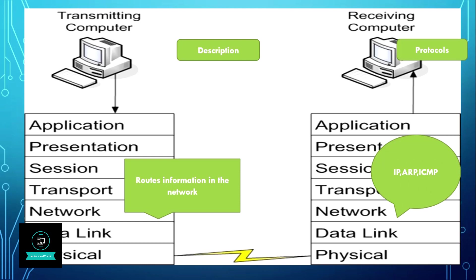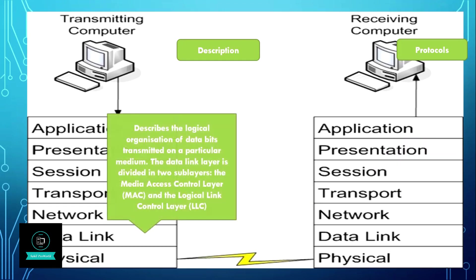The second layer is the data link layer. It describes the logical organization of data bits transmitted on a particular medium. The data link layer is divided into two sublayers: the Media Access Control layer (MAC) and the Logical Link Control layer (LLC). It works on protocols SLIP and PPP.